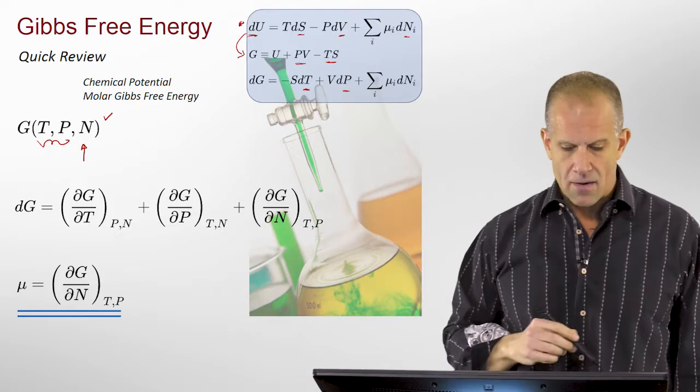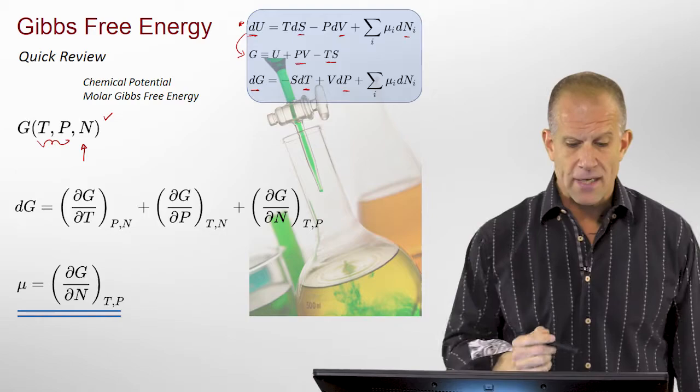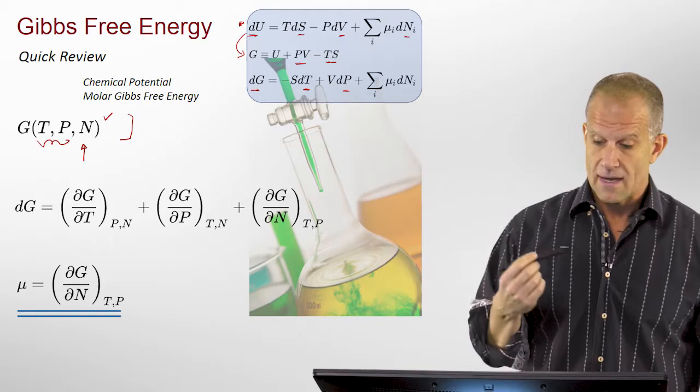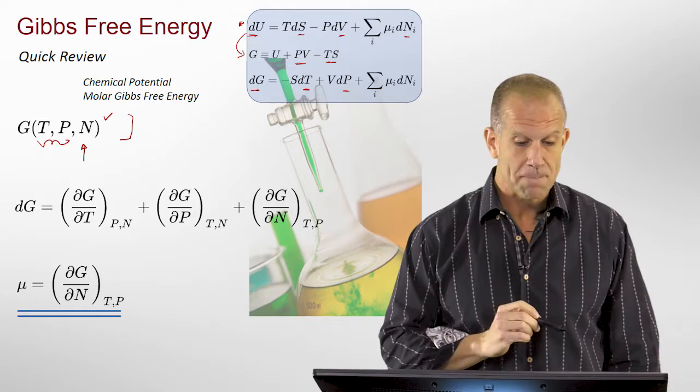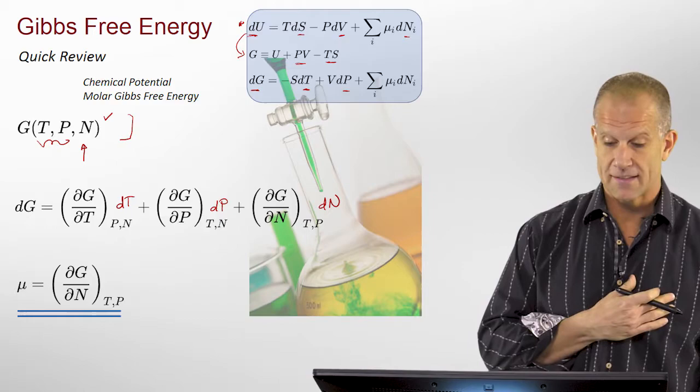This is how we build thermodynamics. Because this energy, just like the internal energy, is a state function — it's independent of path — we can use exact differentiation. We can expand this as a set of three partials that we're looking at: with respect to temperature, pressure, and number of moles of the system.